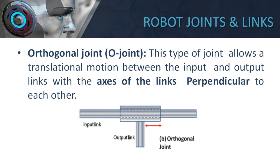The next type is the orthogonal joint or O-joint. It also allows a translational motion between the input and output link, but here the axis of the links are perpendicular to each other. The input link gives input to the output link and makes the motion perpendicular. If the arm of the robot has to move perpendicular to the input, it must use an O-joint. The linear joint as well as the orthogonal joint are called prismatic joints because they provide motion in translational direction — parallel and perpendicular to the axis.